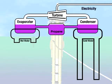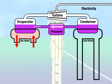Ocean Thermal Electric Conversion takes the hot surface water and uses it to boil another liquid, like propane, which has a very low boiling point — the temperature at which a liquid becomes a gas. This is the same propane used in our ovens and outdoor grills, only it is never burned.